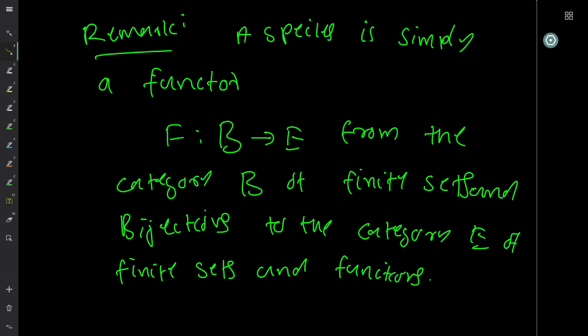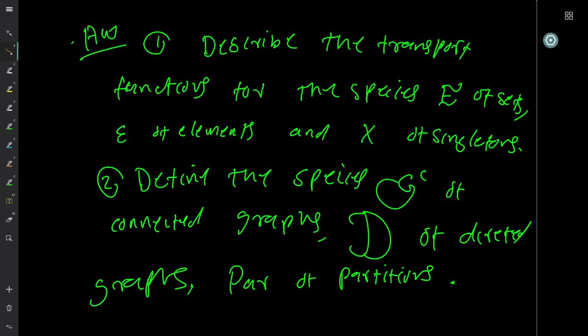As a remark, a species is simply a functor F from B to E, where B is the category of finite sets and bijections, and E is the category of finite sets and functions. If you are not familiar with category theory, just forget about it — it is just a remark. We are not going into category theory here.